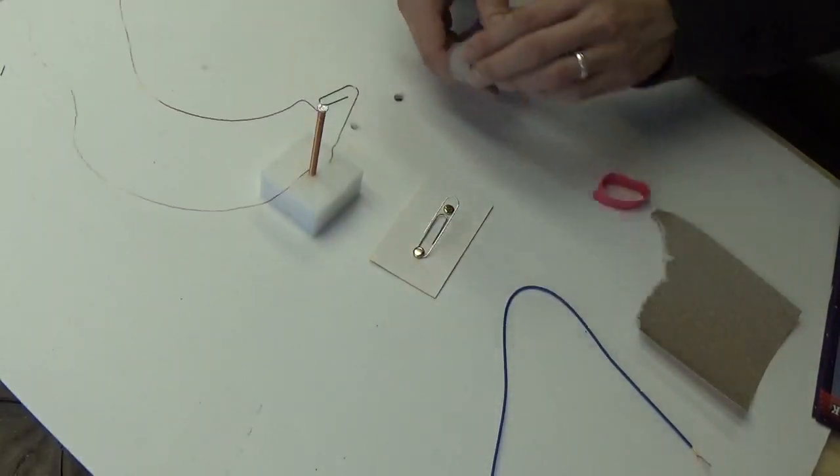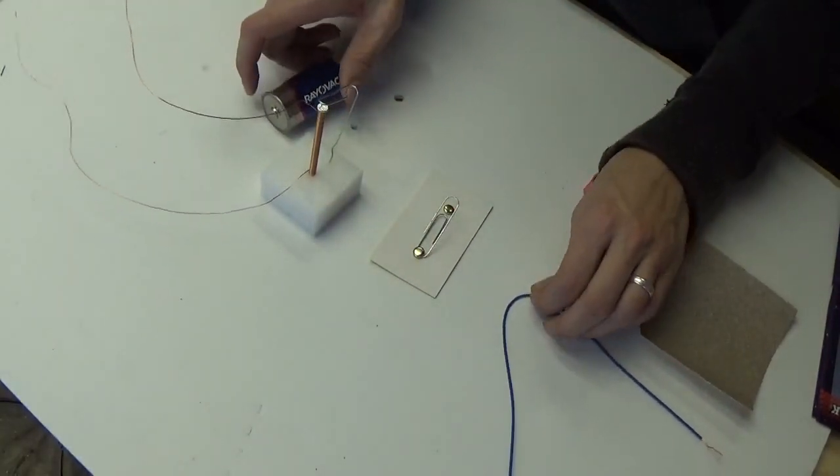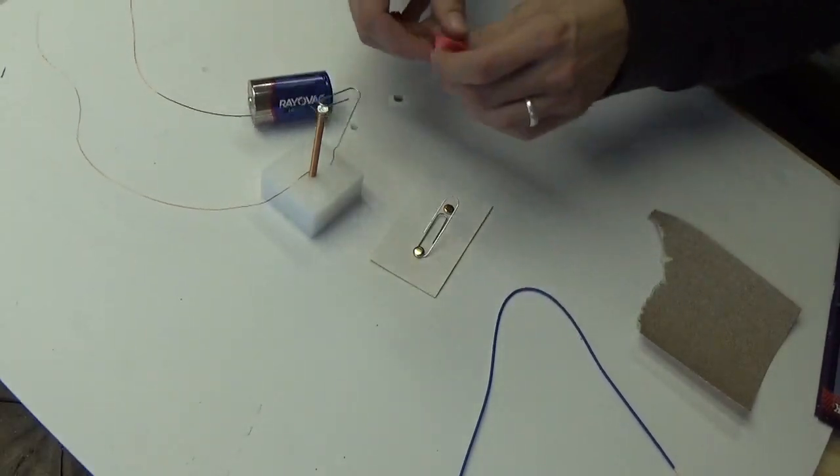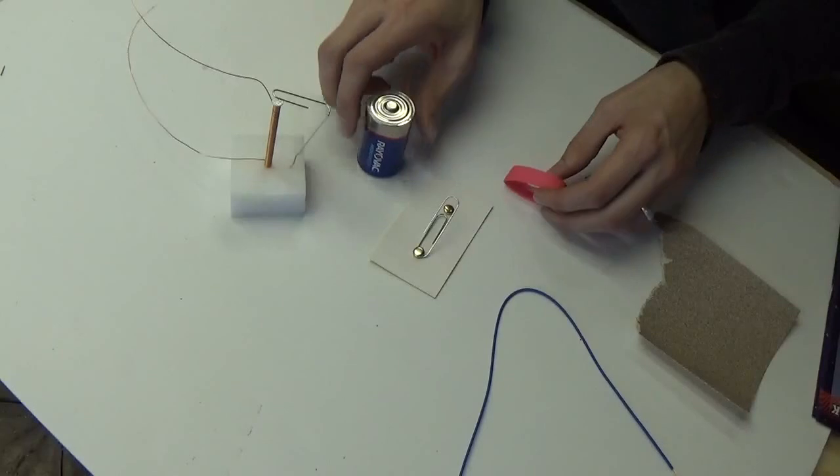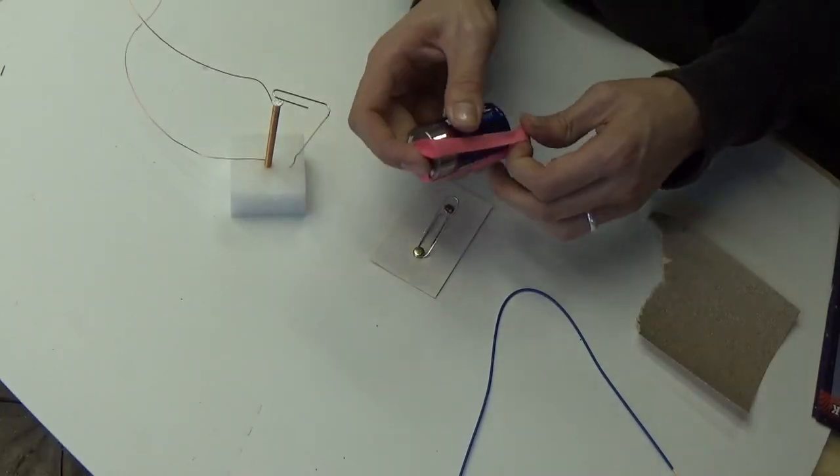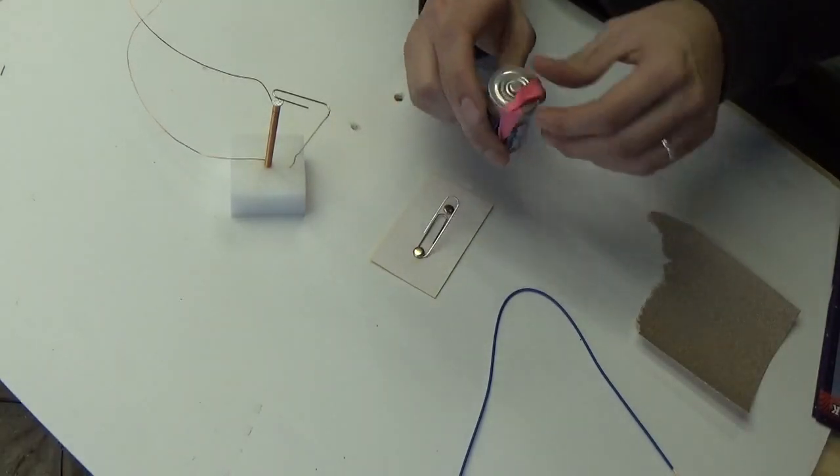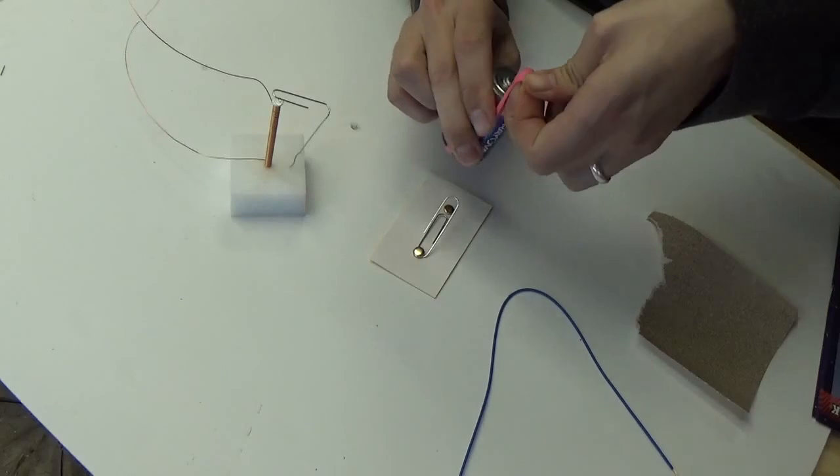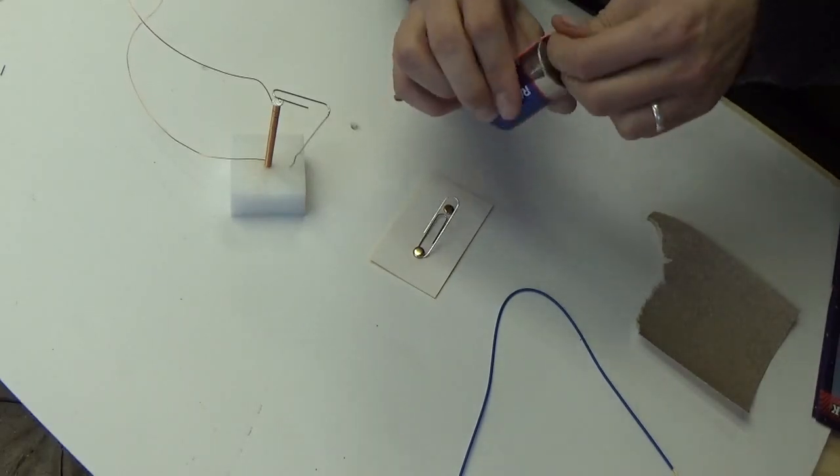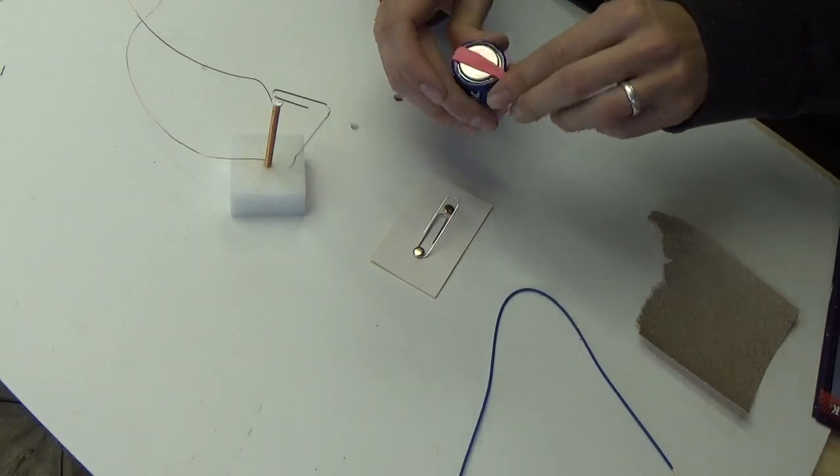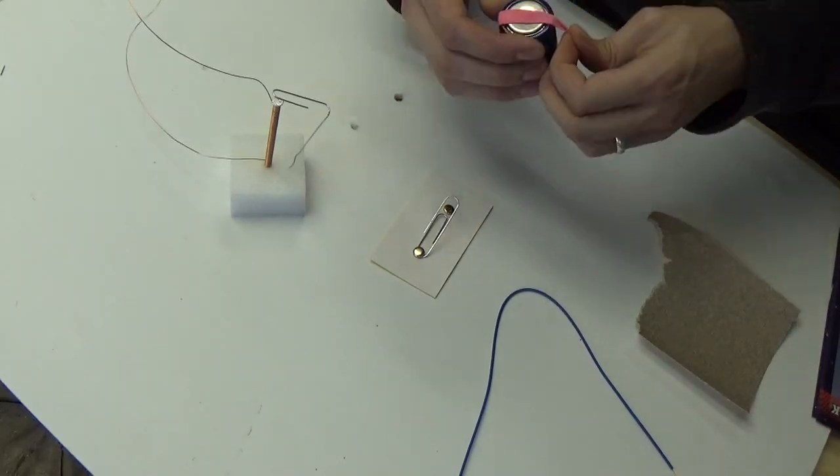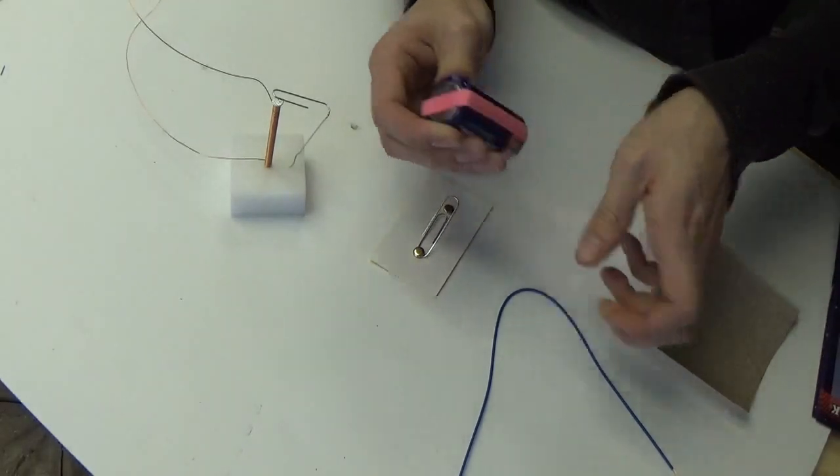Next, take your battery and your little rubber band here. Take it and just wrap it around the battery. Just like that. And that way you don't have to use electric tape or anything like that for the wiring. And you can just take it off and on and it works pretty well.